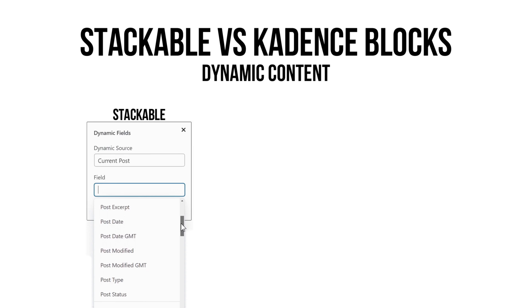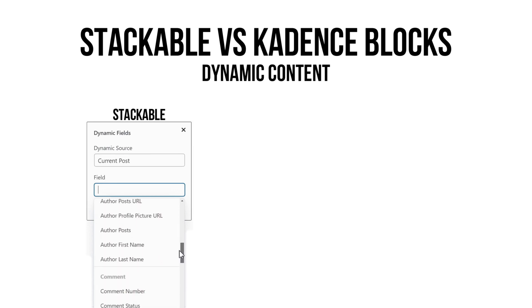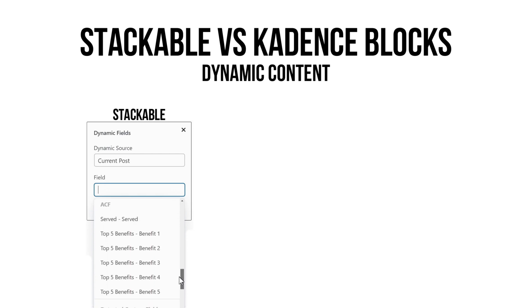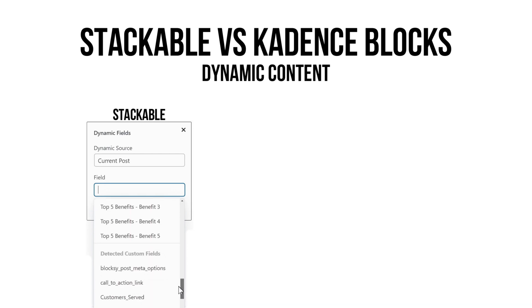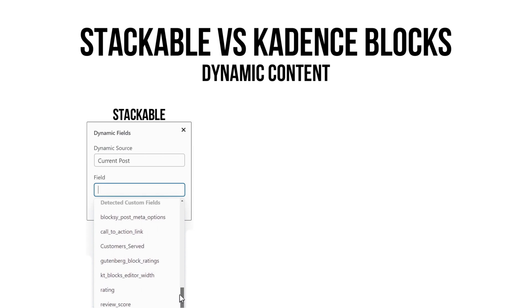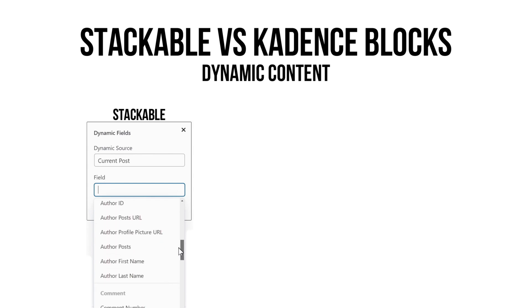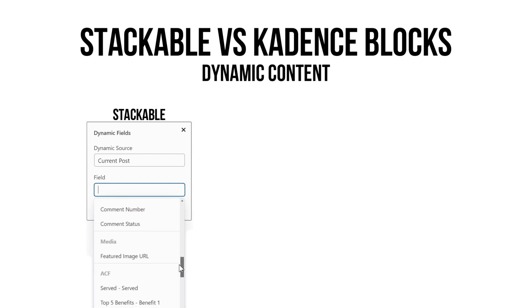Honestly, I don't see a need to draw information from a current post because you are already working on it. But what I think is useful is when you are designing templates for your website. So these are the contents you can draw from the current post: post information, author information, comment, and the featured image.